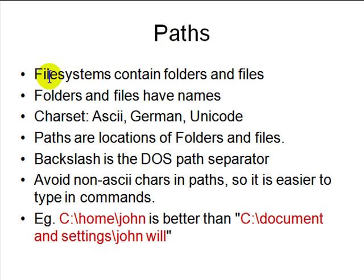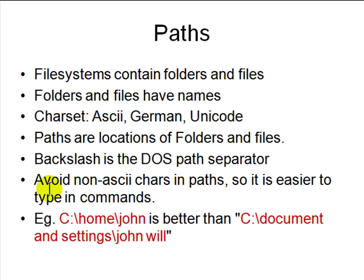A file system contains folders and files, and your character set determines what kind of file names you can use — Unicode, ASCII, or locale-specific like German. One big difference between Windows and Linux is that the backslash is the DOS path separator, while on Linux it is a forward slash. If you have spaces in your path, you need to put double quotes around the string, otherwise the shell will treat each word as a separate argument.